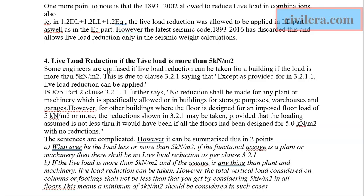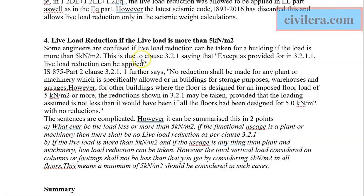Reading clauses 3.2.1 and 3.2.1.1 of IS 875 Part 2 can cause confusion because they are a little complicated. Some readers get the impression that live load cannot be reduced if it exceeds 5 kN/m², but that is not the case. Even if your live load is more than 5 kN/m², you can reduce it for vertical load components, subject to certain conditions detailed in the blog.